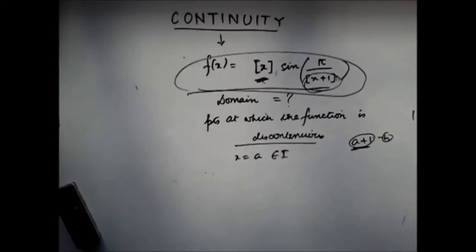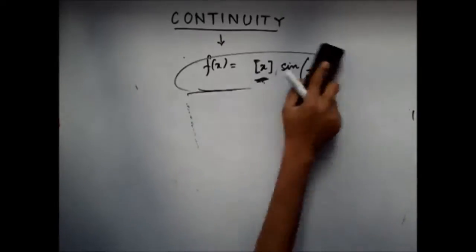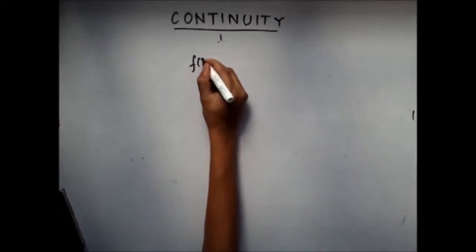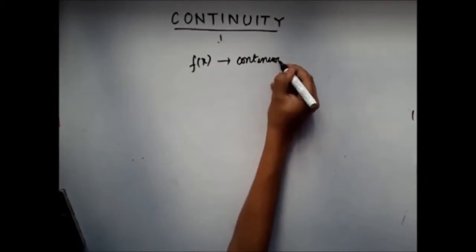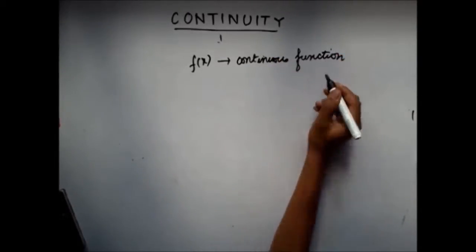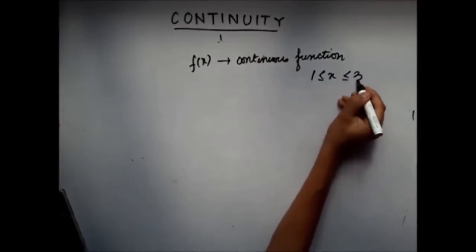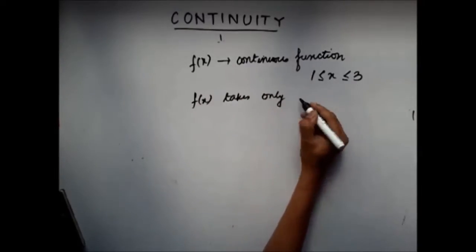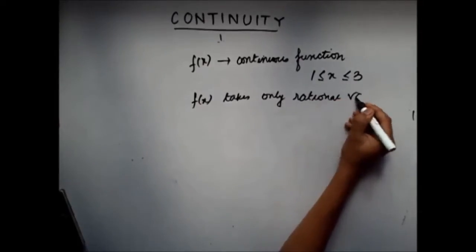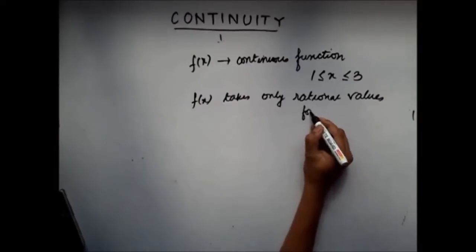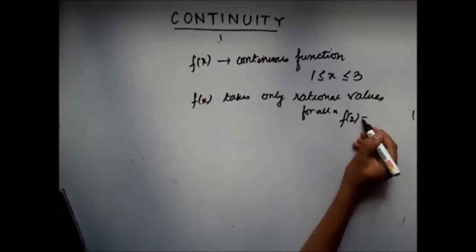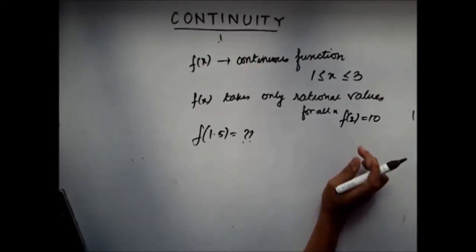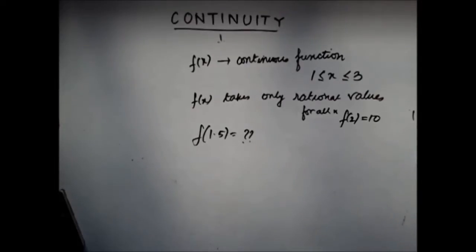Now let's take another example. You have been given a function f(x), which is a continuous function defined between x = 1 to 3. It is said that f takes only rational values for all x, and also that f(2) = 10. You are asked to find f(1.5). This question was also asked in IIT-JEE, so try this question on your own and then only proceed with the solution.